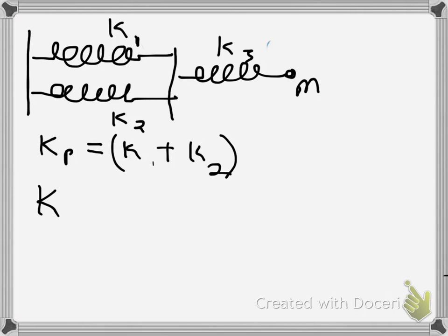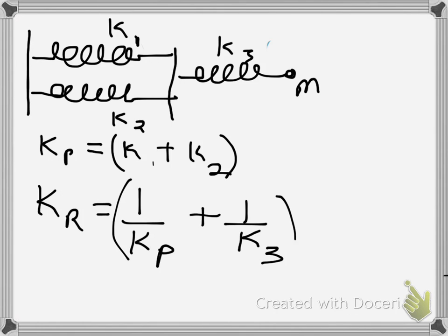So now imagine that as one new thing. So our k resultant or k effective, if I'm thinking about that resistor analogy, would be 1 over k parallel plus 1 over k3 inverse.